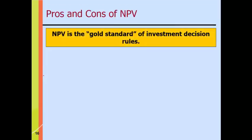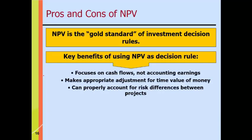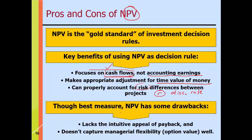Now for the pros and cons of NPV. Mostly pros — this textbook calls NPV the gold standard of investment decision rules. It focuses on cash flows, which is what matters in finance — not accounting earnings, which have to be adjusted to get to cash. Cash flows are what we pay dividends and interest with. It appropriately adjusts for time value of money through discounting, and accounts for risk differences between projects by adjusting R. The drawbacks: it's a little harder to understand than payback period, and it doesn't capture managerial flexibility perfectly — but those are pretty minor issues.